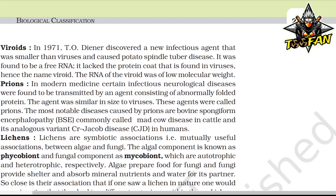Viroids: In 1971, T.O. Diener discovered a new infectious agent smaller than viruses that caused potato spindle tuber disease. It was found to be a free RNA lacking the protein coat found in viruses, hence the name viroid. The RNA of the viroid was of low molecular weight. Prions: In modern medicine, certain infectious neurological diseases were found to be transmitted by an agent consisting of abnormally folded protein, similar in size to viruses — these were called prions. The most notable diseases caused by prions are bovine spongiform encephalopathy (commonly called mad cow disease in cattle) and its analogous variant Creutzfeldt-Jakob disease (CJD) in humans.